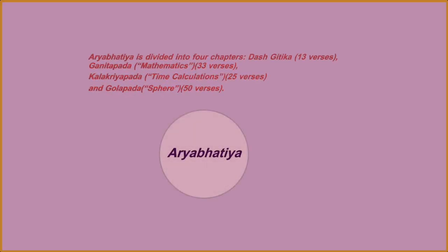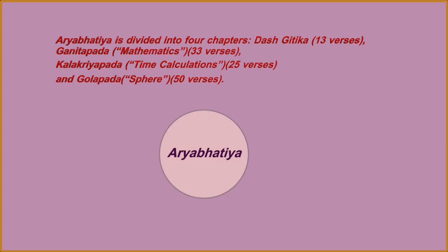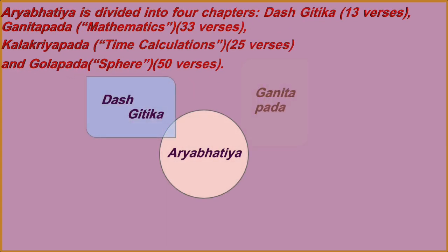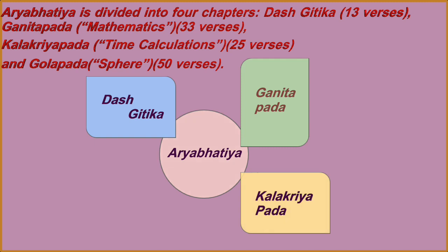Aryabhattiya is divided into four chapters. Dasha Githika, 13 verses. Ganita Pada, Mathematics, 33 verses. Kalakriya Pada, Time Calculations, 25 verses. Gola Pada, Sphere, 50 verses.